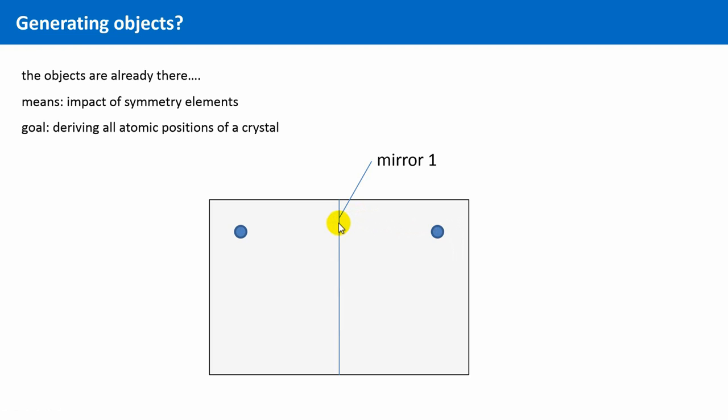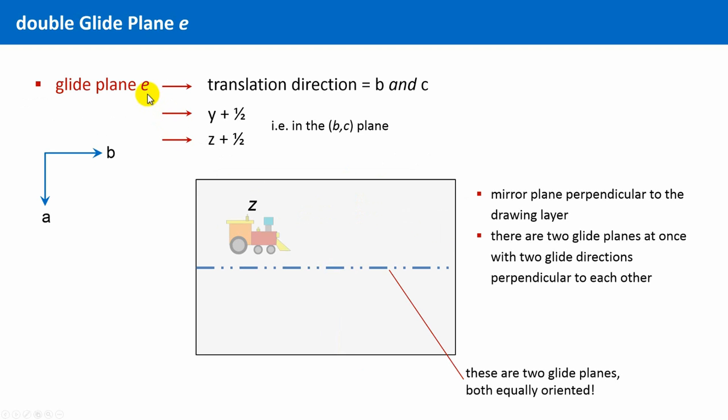Let's move on and discuss the last missing glide plane E. Here also a set of four objects will be generated. This is, in my opinion, the most difficult glide plane to understand. And the reason for this might be that in a way two different planes are present at the same time. However, they have the same orientation. They fall together. The plane component of this glide plane is identical. And this means the mirroring, the reflection part, is identical for both planes. And the two differ only by the translation direction.